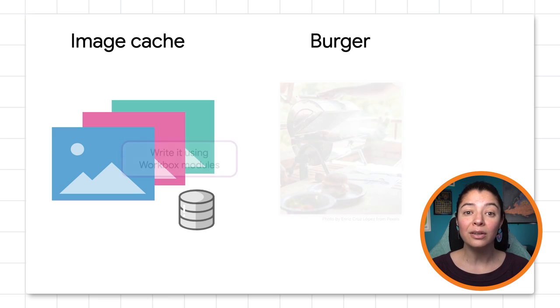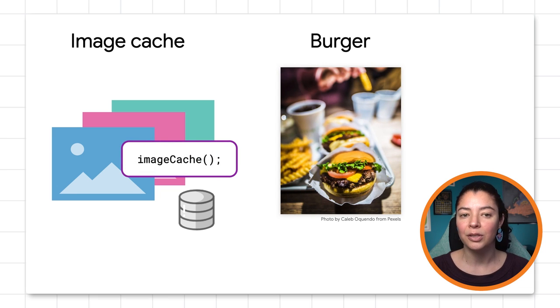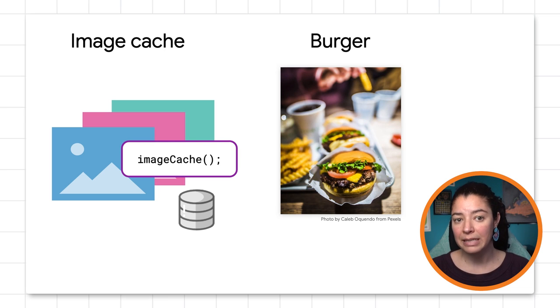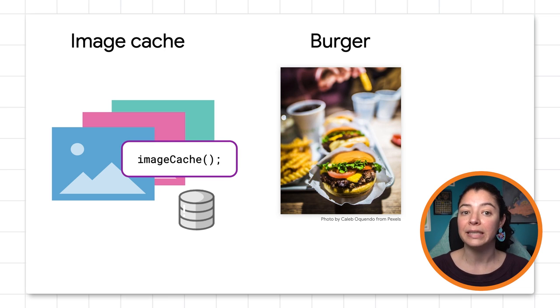Or you can go to a restaurant and order the burger you want — all you have to do is eat. That would be like using the Workbox recipe. You don't have that much flexibility, but you'll be done with your task with one line of code. Let me show you how to implement options two and three — the caching patterns, not the burger.